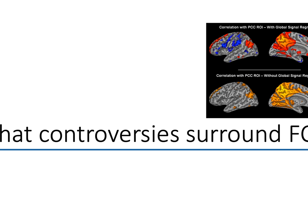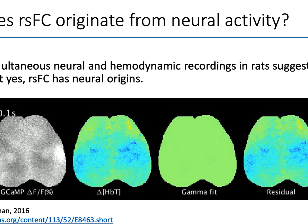Let's talk about controversies, because that's why we're here — functional connectivity has plenty. The first: does resting state functional connectivity really originate from neural activity, or is it just about non-neural fluctuations in blood flow, blood pressure, and other things that might contribute to the BOLD response? Work by Elizabeth Hillman and Ratz simultaneously measured neural activity with calcium imaging and hemodynamic activity, and found that the two corresponded pretty well — they see resting state fluctuations in both, and they're well-correlated. So there's good evidence that this is real neural activity.